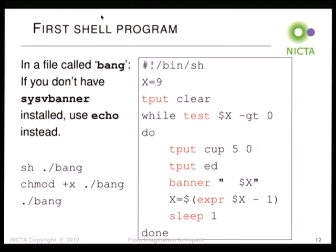As a brief note, there's a banner in the BSD games package, but that's a different banner. We want the System V banner for this one. The BSD banner prints things horizontally and much bigger — it's designed to be printed out on the line printer so you can have a great big banner. Whereas the System V banner was originally designed to write banner pages for LP commands, so when your printer output comes out you can see your name easily in the stack of paper. On Ubuntu it's called 'sysv-banner'; just called 'banner' in Fedora.